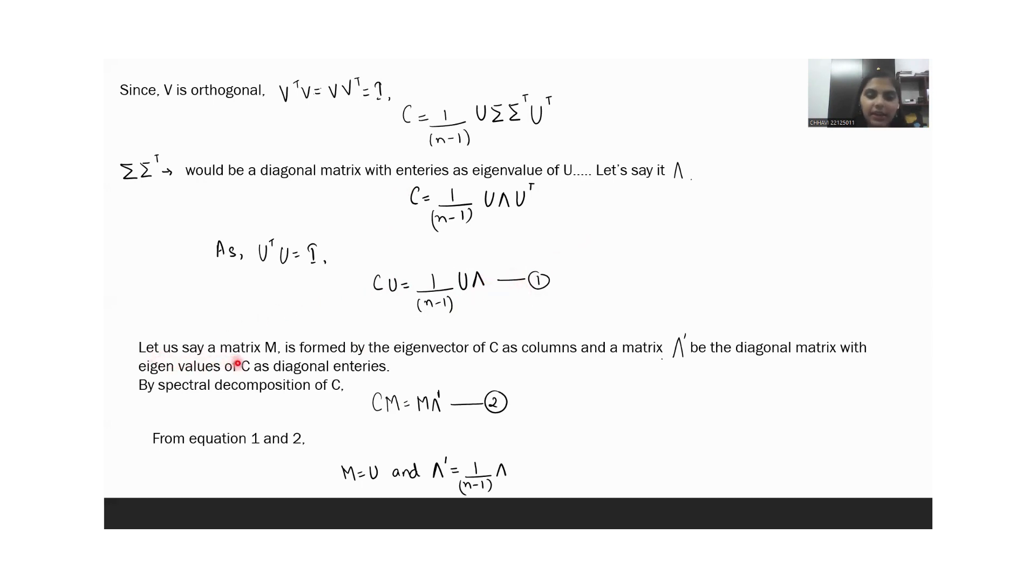Let us say a matrix M is formed by the eigenvectors of C, and lambda dash be a matrix with its diagonal entries equal to the eigenvalues of C. The spectral decomposition of C would reduce to this. Now comparing both these equations we can see that U is same as M, and lambda is proportional to lambda dash with the proportionality constant 1 by N minus 1.